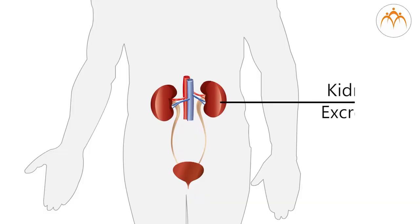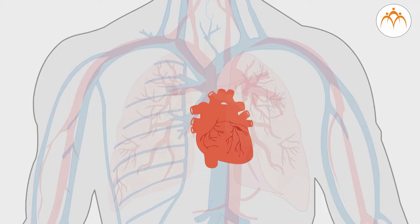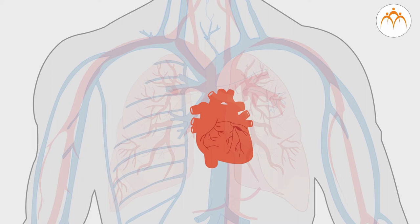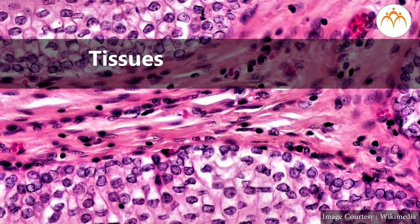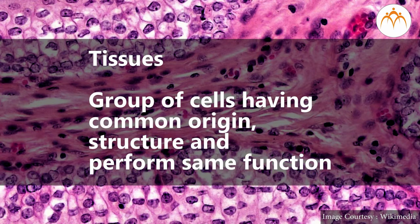For example, kidneys will do excretion, lungs will help in breathing, heart will pump the blood, and so on. This forms tissues in our body. A group of cells that perform a particular function gives rise to tissue. Many tissues form organs, many organs form organ systems, and inside an organism there are many organ systems.